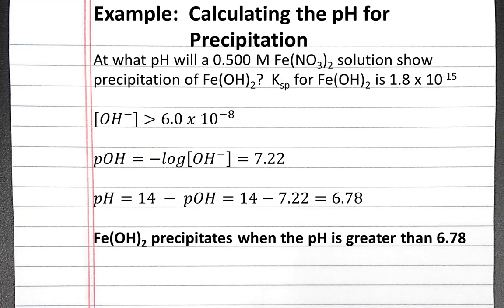So iron 2 hydroxide will precipitate when the pH is greater than 6.78.